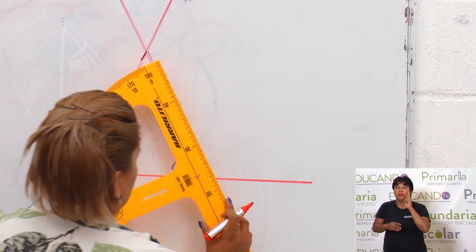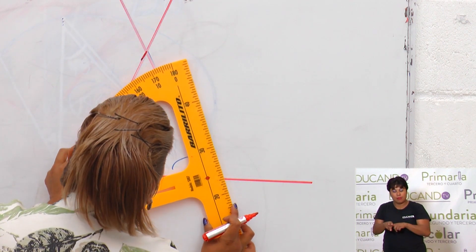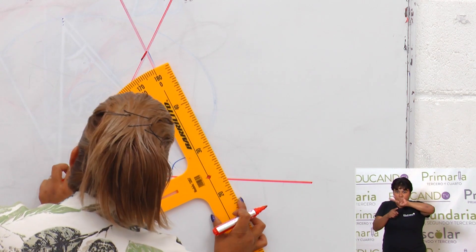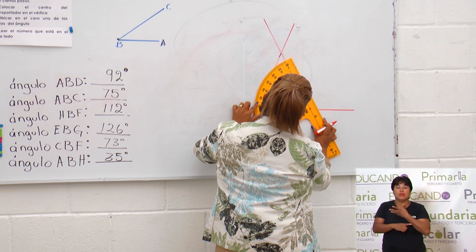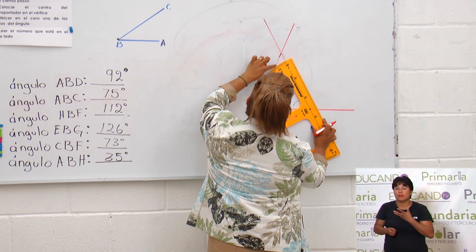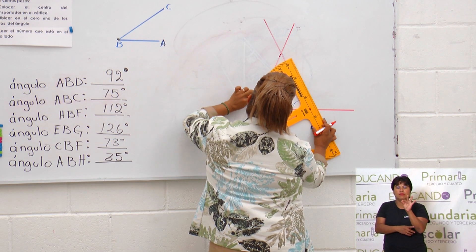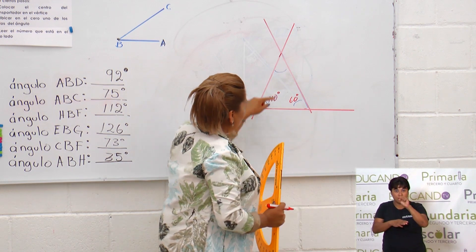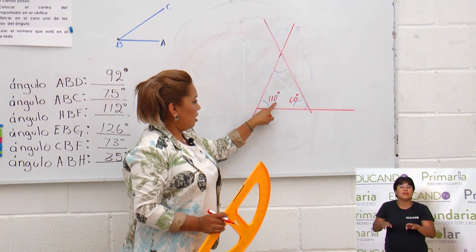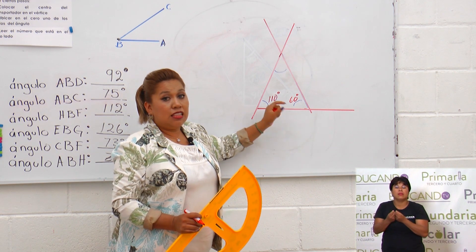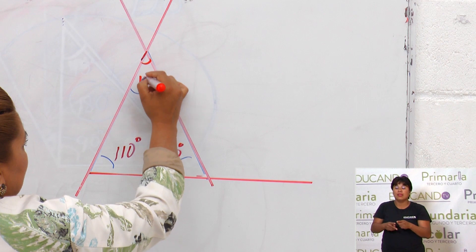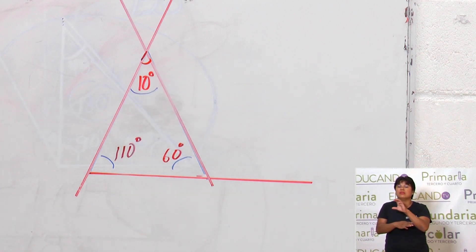Ahora vamos a ver cuánto mide este. Igual, partimos en el vértice, ponemos el cero en una de las dos líneas que forman el ángulo, y medimos. ¿Tiene cuánto? A ver, tiene 10, 20, 30, 40, 50 y 60. Por lo tanto, este ángulo ¿cuánto va a medir? Si tengo 110 más 60 sería 170. Si entre todos deben de medir 180, ¿cuánto me falta? Pues 10. Entonces quiere decir que este ángulo mide 10 grados.